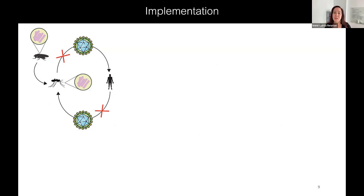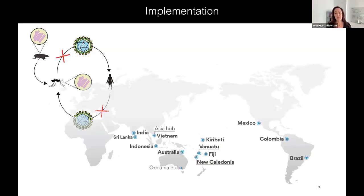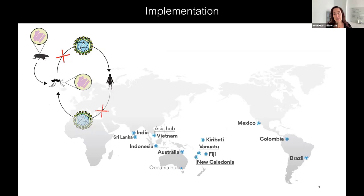If these mosquitoes take a blood meal from a person infected with dengue, the dengue can't replicate in the mosquito, so when it takes a second blood meal it doesn't transmit the disease. The World Mosquito Program has successfully implemented this throughout many parts of the world, and we have evidence that Wolbachia releases are successful in reducing the incidence of dengue in some areas where we have multiple seasons of data.